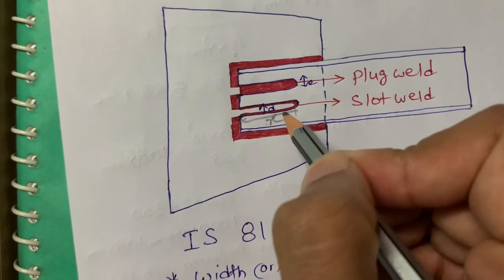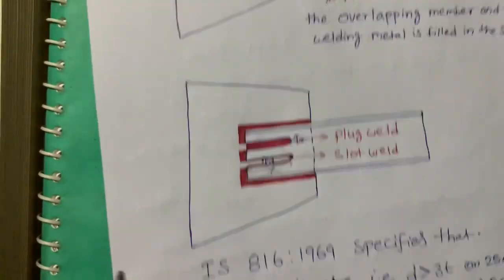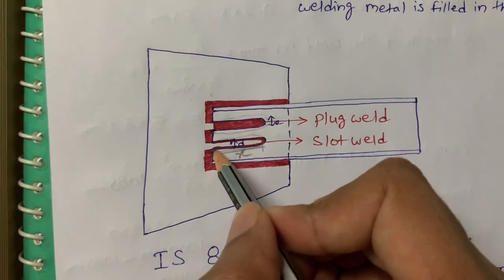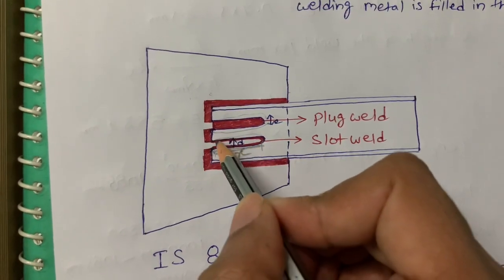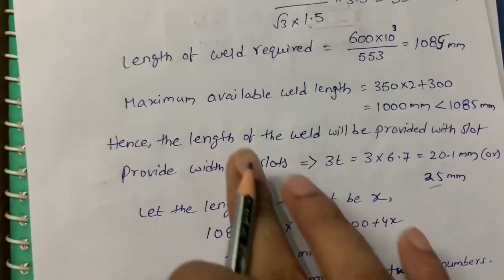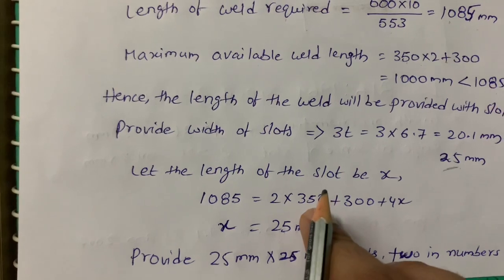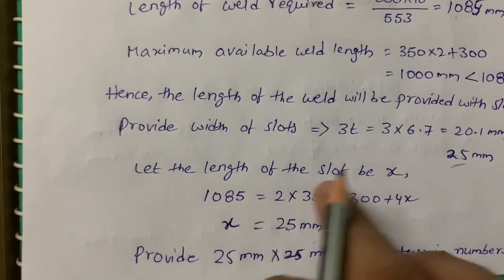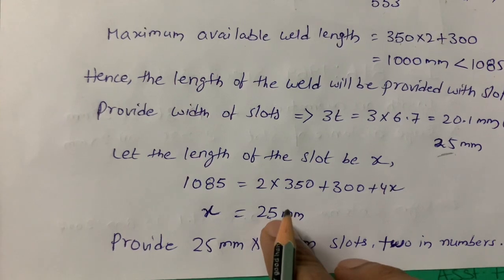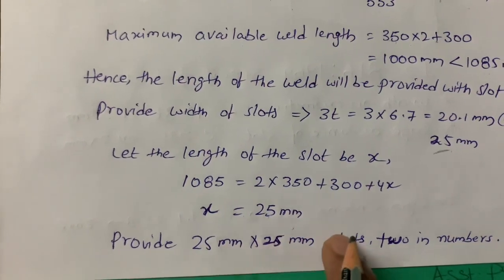Why 4x? Because we are providing 2 slots, and each slot contributes 2 sides of weld. So each slot side is x, and with 2 slots that is 4x total. We got x ≈ 22 point something, so provide 25 mm. Final answer: provide 25 mm × 25 mm slots, 2 in number.